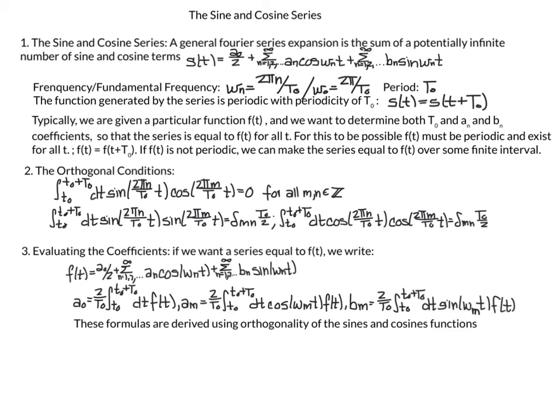The idea is that sines and cosines of different frequencies form an orthogonal basis. Recalling from linear algebra, the inner product of two basis elements is zero if m ≠ n. The inner product of functions is defined as the integral, so the inner product of a sine and cosine basis element equals zero since they are different. Two sines at different frequencies are different basis elements and give zero, but the same basis element with itself gives T_0/2, and similarly for cosine.